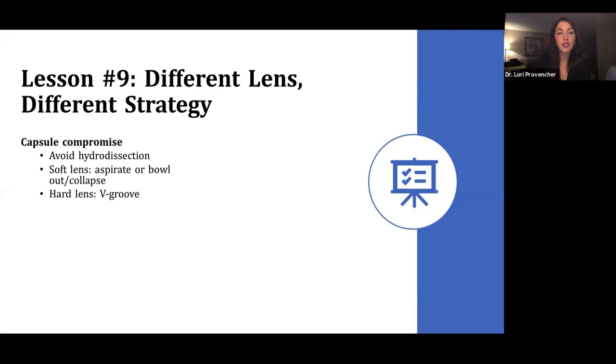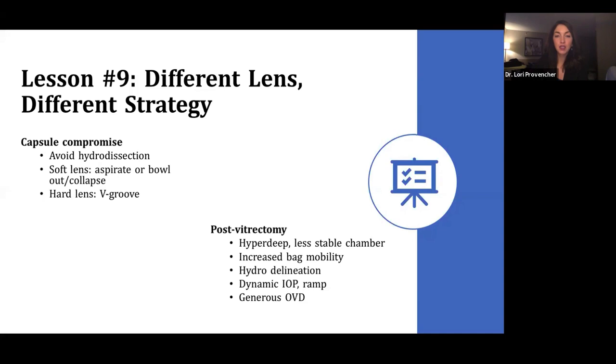For eyes that have been vitrectomized, you need to anticipate that the chamber could be hyper-deep. You don't have that vitreous there to stabilize the eye like you once did. The chamber is going to be less stable. The bag is probably going to be more mobile. So in these eyes, I like to do hydro delineation, because then you have a nice cortical, epinuclear shell there to keep the bag back and stable. You want to be ready to adjust your IOP. So when you're doing cortical removal, you might want a little higher IOP to keep the bag back. During these cases, I would advise you to be generous with your viscoelastic.